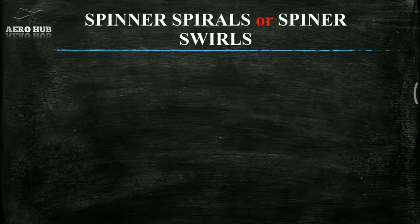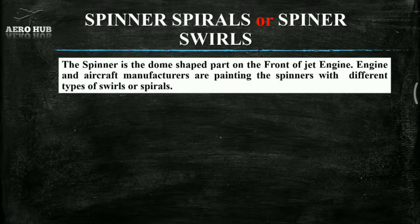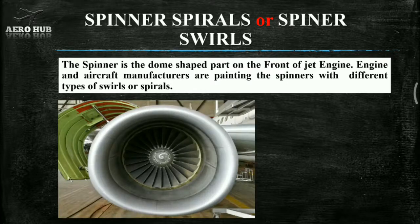The spinner is the dome-shaped part on the front of a jet engine. Engine and aircraft manufacturers are painting the spinners with different types of swirls or spirals. You can see an image of the front part of a jet engine with the spinner spiral markings. There are different types of designs used as spirals or swirls. The selection of the design depends upon the airline company or engine manufacturers.